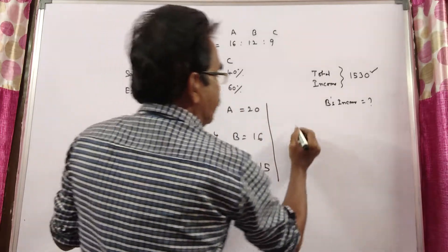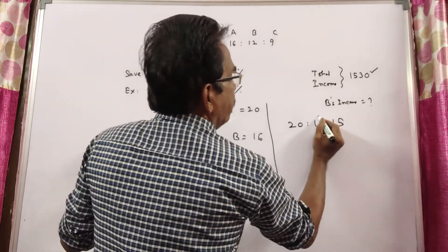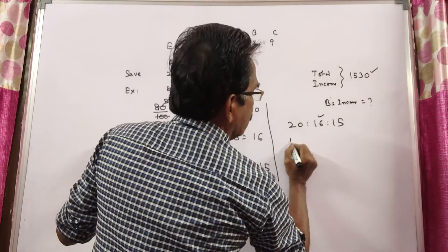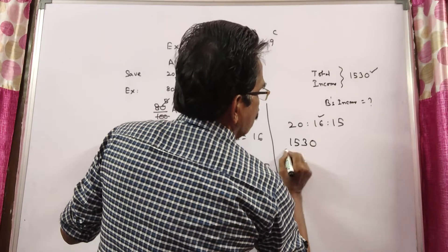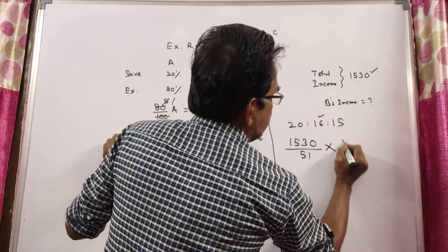So the income ratio is 20:16:15. We want B's income. Total income is 1,530. 1,530 divided by 51, times 16.